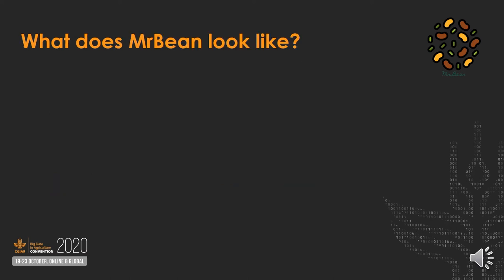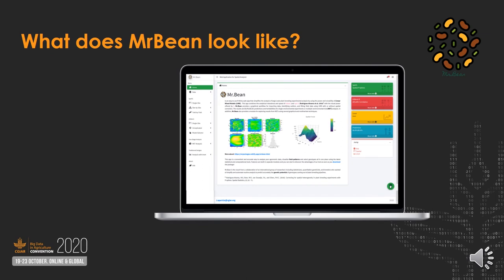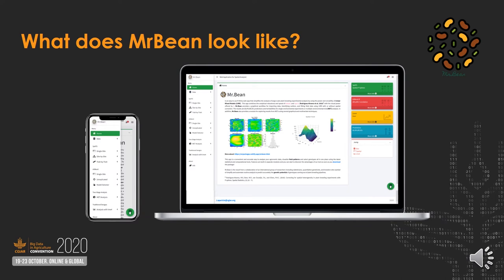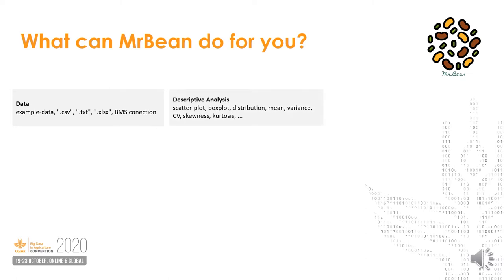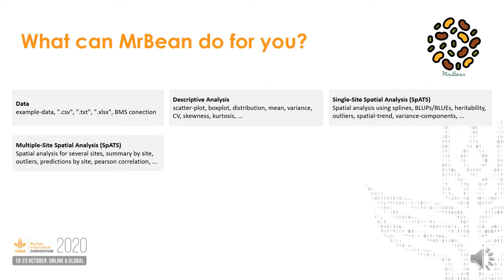What Mr. Bean looks like — this is basically the home page for Mr. Bean. If you want to give it a try, you can use your cell phone or your computer by following the next link. What can Mr. Bean do for you? First of all, it allows you to import data regardless of file type. It also allows you to connect with a breeding management system, so you can get data directly from Mr. Bean. Once you have the data, you can jump to descriptive analysis, then fit the spatial analysis using, for example, SPATS. If you have more than one site, you can run multiple sites using this approach.